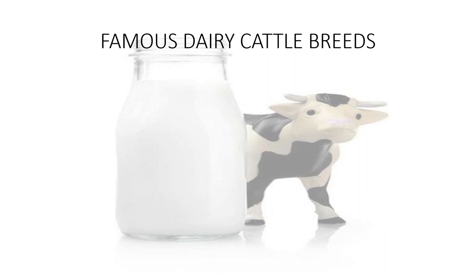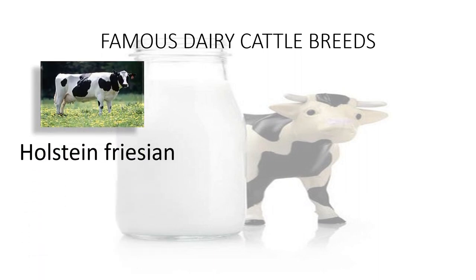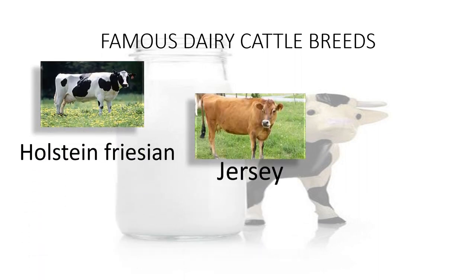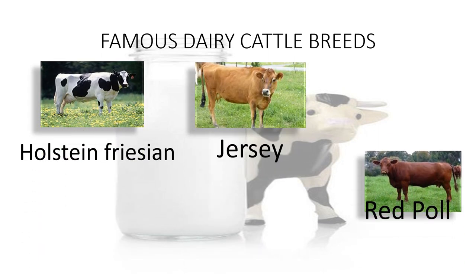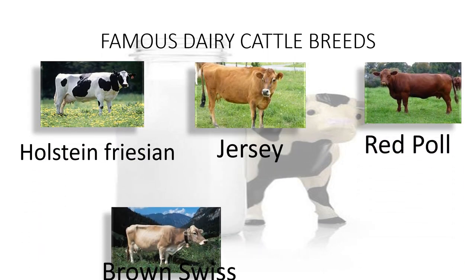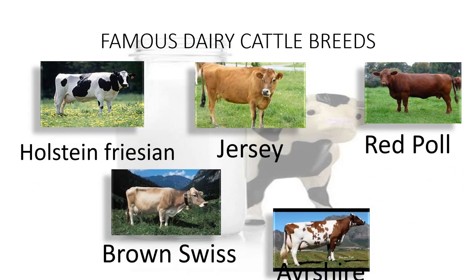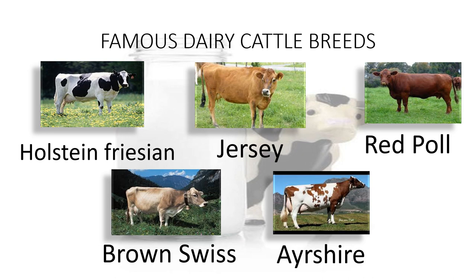Famous dairy cattle breeds: Holstein Friesian, Jersey, Red Poll, Brown Swiss, and Ayrshire.